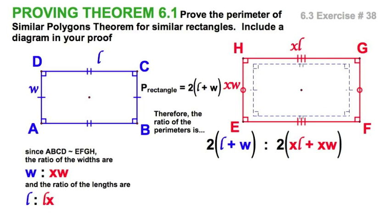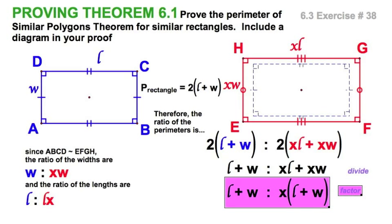And let's see if we can simplify this. I'm going to divide both sides of the equation by two. Then all I've got to do is I can factor. On the right-hand side of the equation, let's factor out the x.